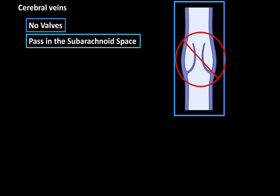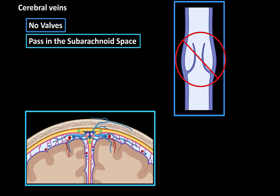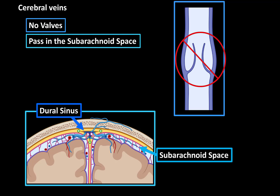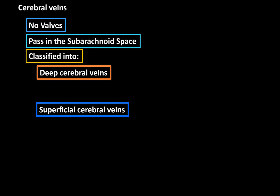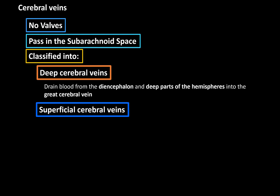The cerebral veins lie in the subarachnoid space. Here we see a coronal section of the brain. Here's the superior sagittal sinus, which lies in the space between the two layers of the dura mater. And here's the subarachnoid space, which contains the cerebral veins draining into the dural sinuses. They are classified into the deep cerebral veins and the superficial cerebral veins. The deep cerebral veins drain blood from the diencephalon and the deep parts of the hemispheres into the great cerebral vein. The superficial cerebral veins collect blood from the cerebral cortex and drain into the venous sinuses.